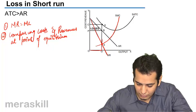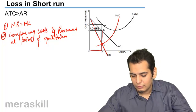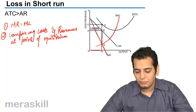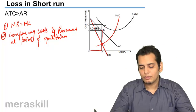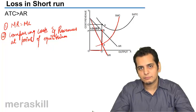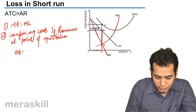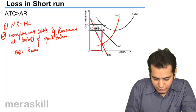From equilibrium, I will go up and meet the average revenue curve at point B. So BQ is the revenue.